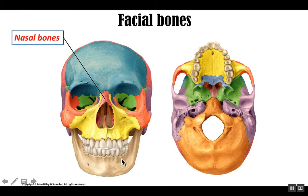Let's begin with the paired nasal bones. These two bones are small, flattened bones, somewhat rectangular shaped, and together form what we would call the bridge of the nose. So this is where your sunglasses or eyeglasses rest on your face.